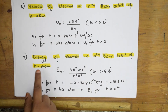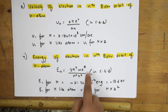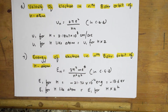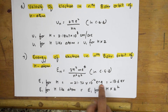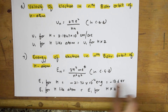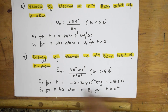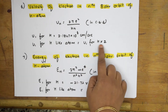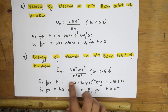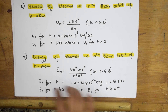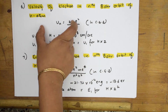For the energy of the electron in the nth Bohr orbit of hydrogen, there is a direct formula — the derivation exists but is not required for CBSE. The energy value for the hydrogen atom is given in electron volts. For a hydrogen-like atom, you multiply the hydrogen energy value by Z² (atomic number squared). Remember: for velocity, multiply by Z; for energy of a hydrogenic atom, multiply by Z².